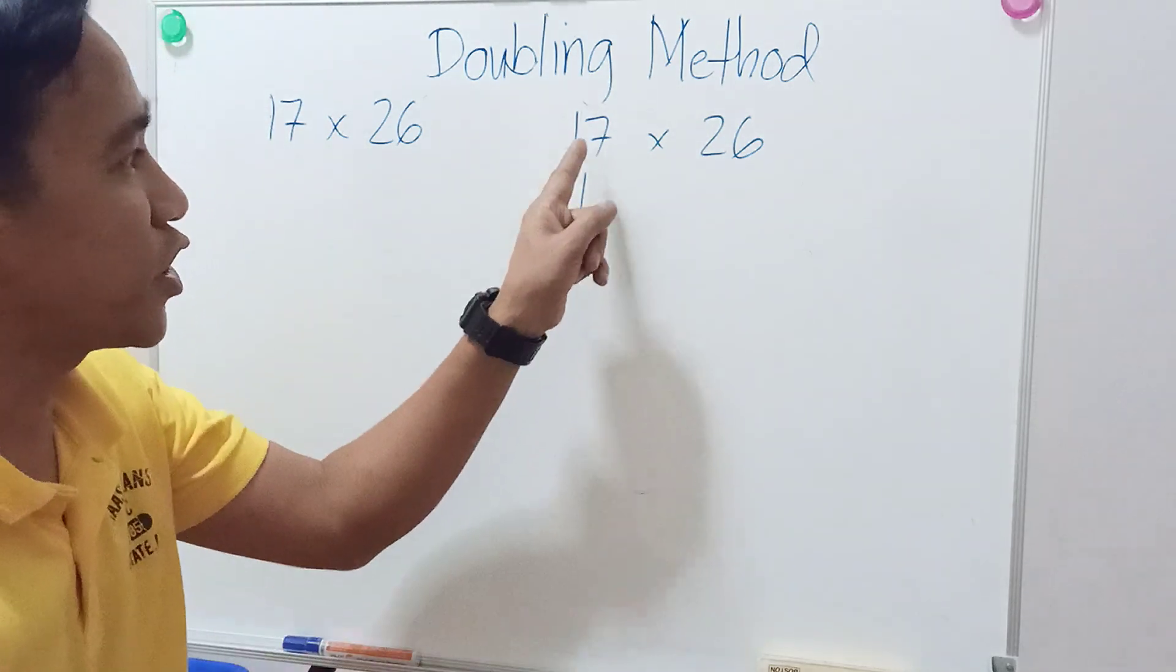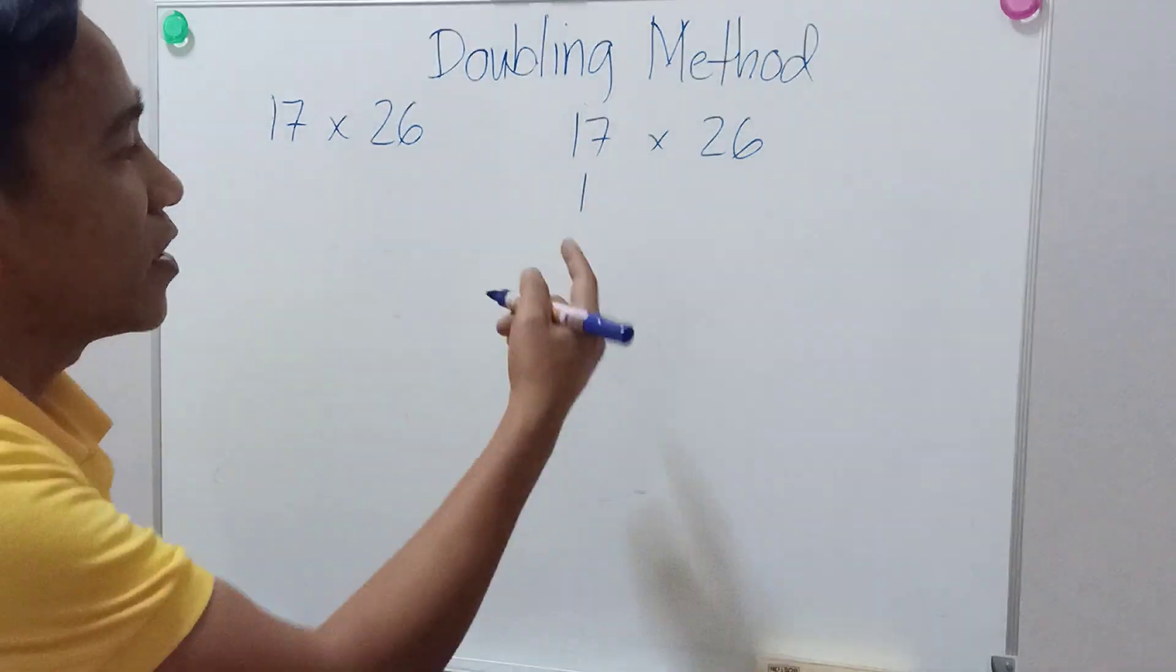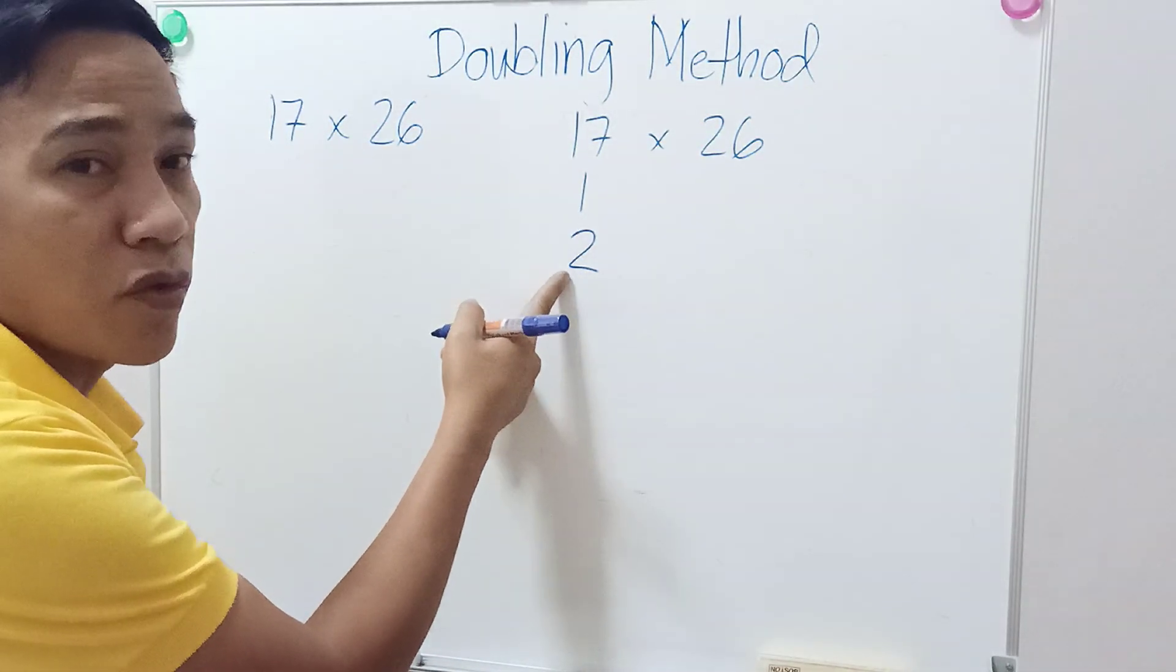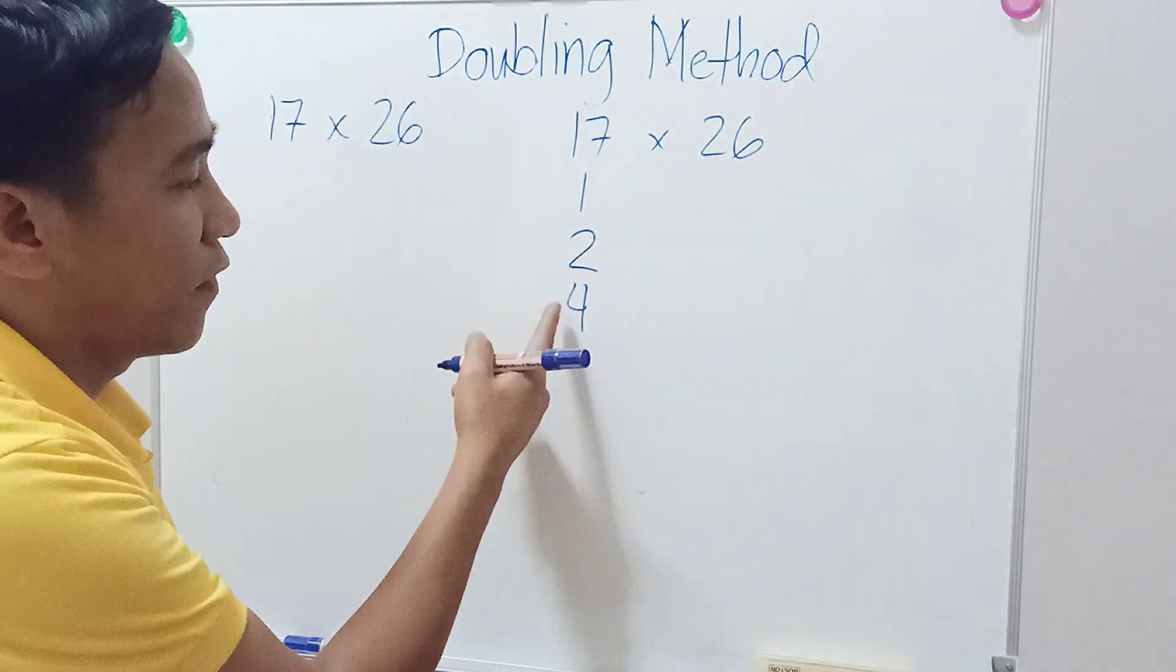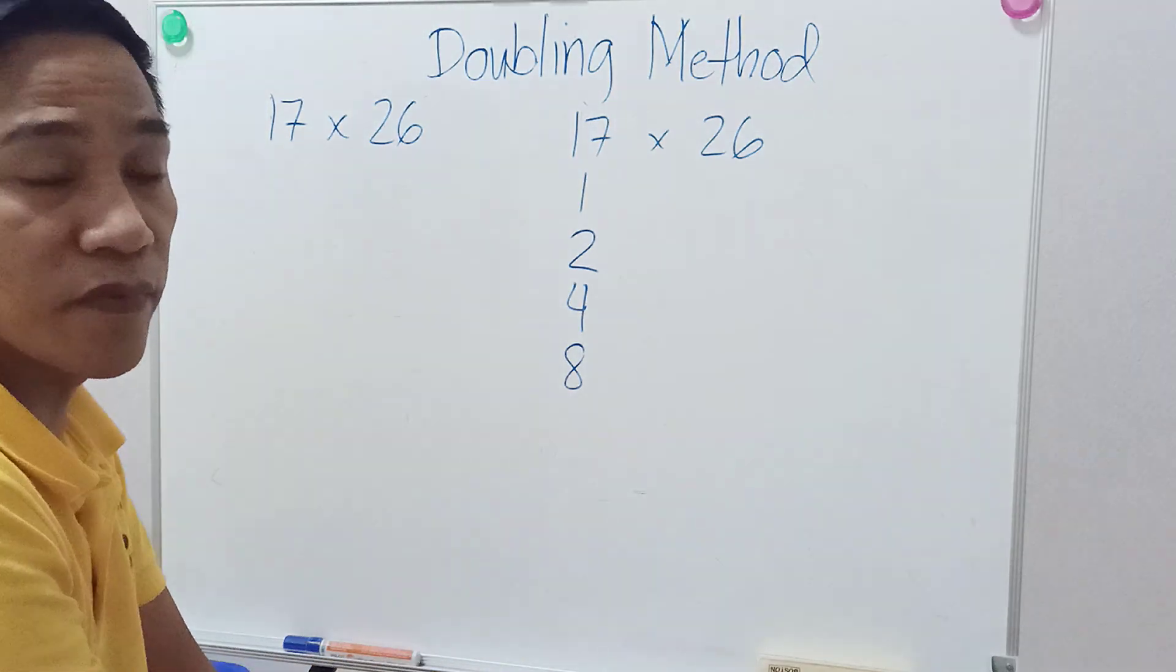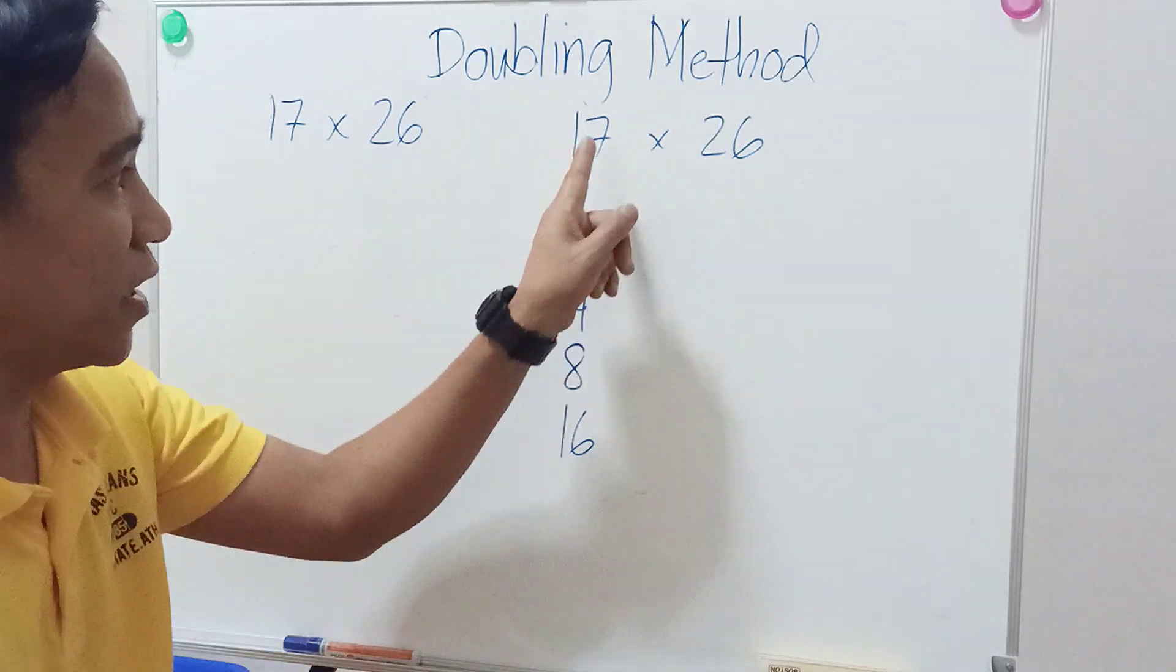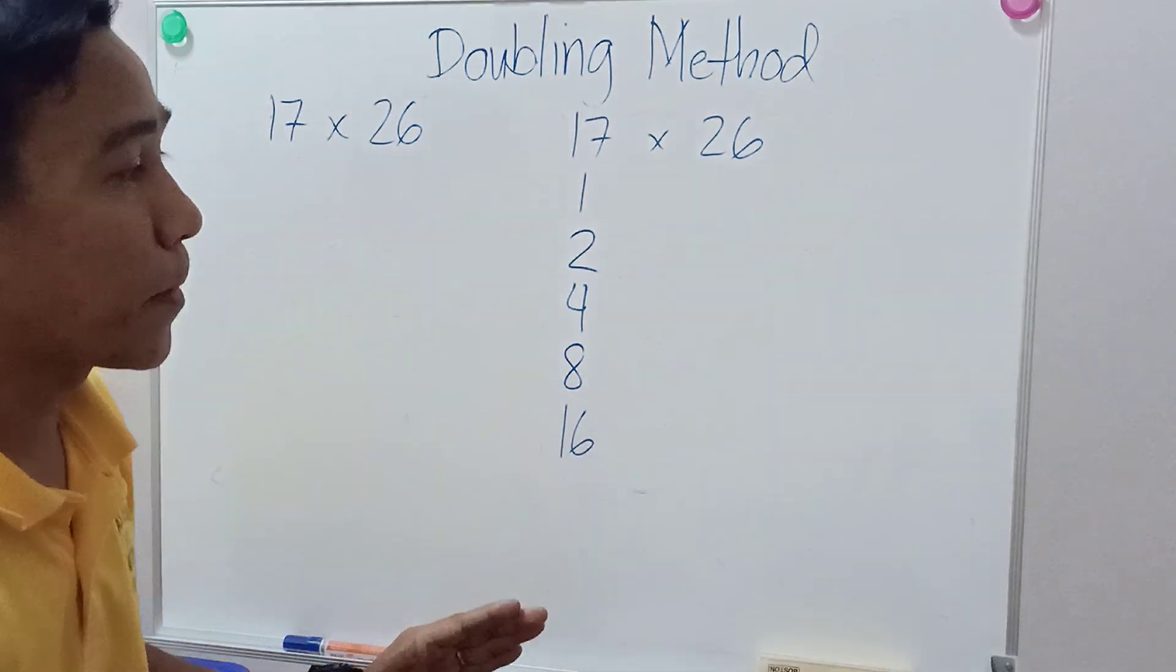So 1, double of 1 is 2, double of 2 is 4, double of 4 is 8, double of 8 is 16. Since 16 is the last number which is less than 17, we have to stop.